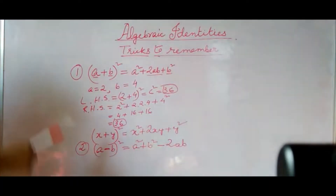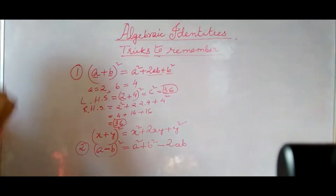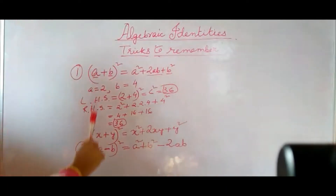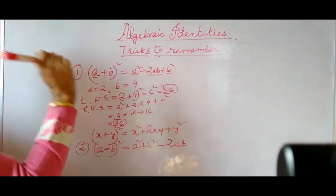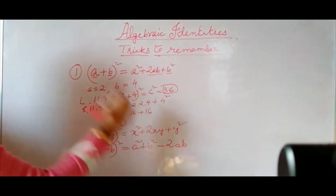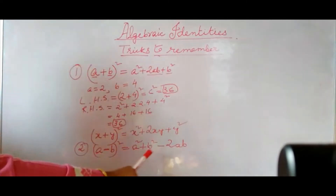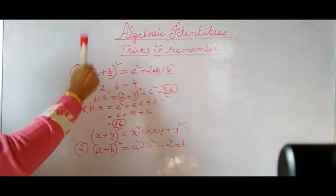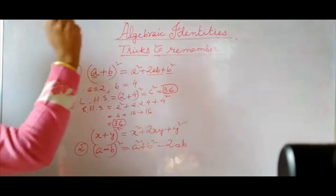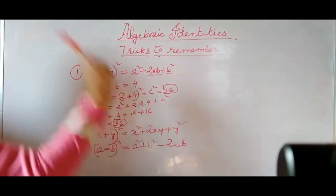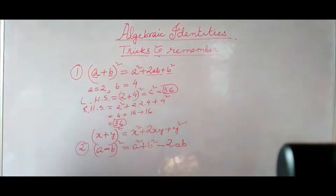So these are the main first two formulas: A plus B whole square and A minus B whole square. Only the sign before twice AB is different — if it is plus then it will be plus; if it is minus then it will be minus.